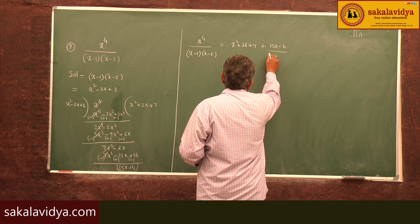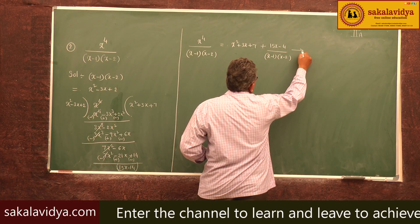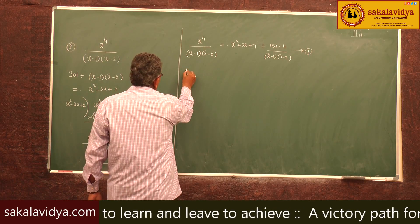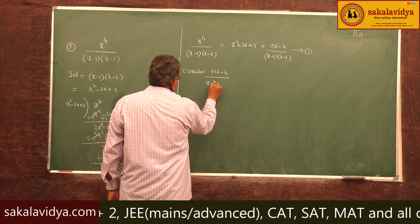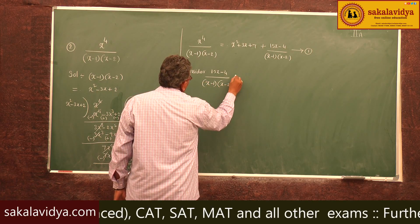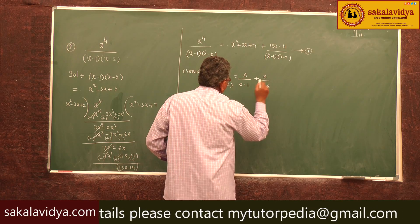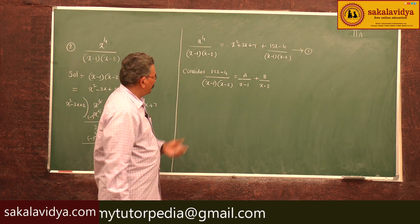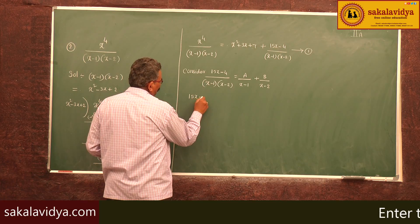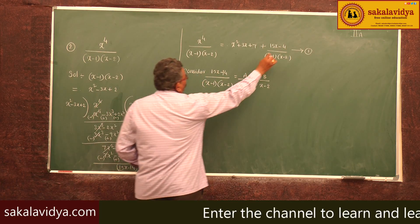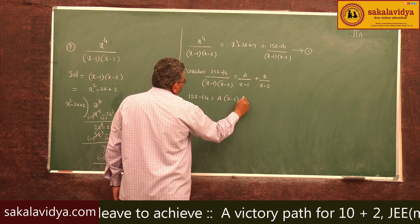It is enough to find the partial fractions of (15x - 14) / [(x-1)(x-2)]. Consider (15x - 14) / [(x-1)(x-2)] = A/(x-1) + B/(x-2). This is simple rule number 1. Multiplying both sides by (x-1)(x-2), we get 15x - 14 = A·(x-2) + B·(x-1).